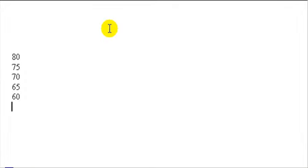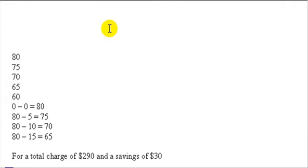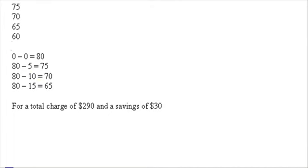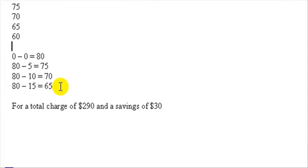Say we want to do four oil changes, just picking a number at random. The first oil change would have zero deduction, so $80. The second we'd subtract $5 to get 75, then 10 gets 70 for the third, and the last one would be 65. This gives a total charge of $290 and a savings of $30.